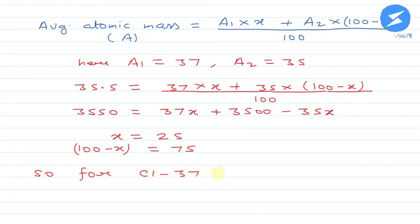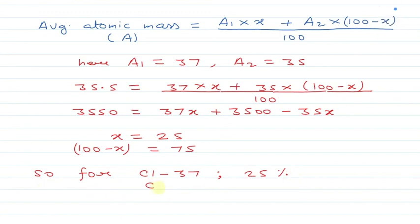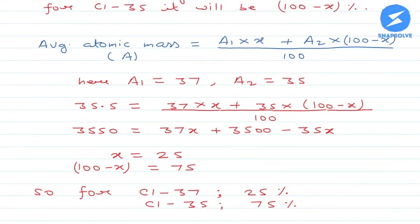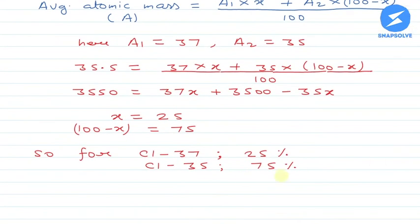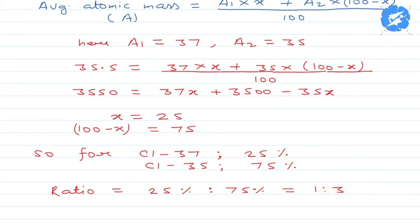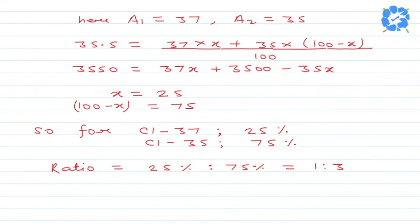So, for Cl-37 the percentage abundance is 25 percent, and for Cl-35 it is 75 percent. यह percentage abundance है। हमें ratio बताना है: Cl-37 to Cl-35 = 25% : 75% = 1:3. 25 × 3 = 75, so the ratio is 1:3, which is given in option C.